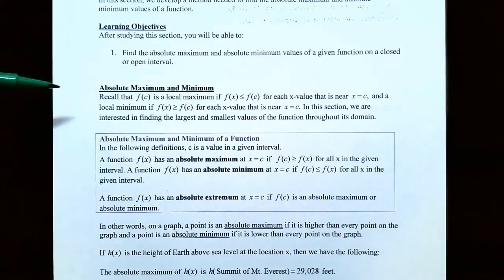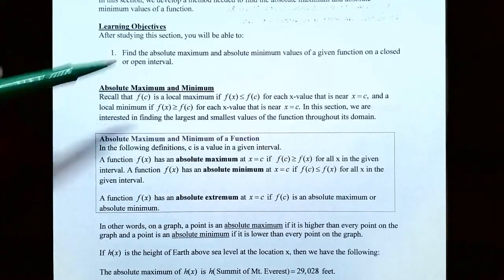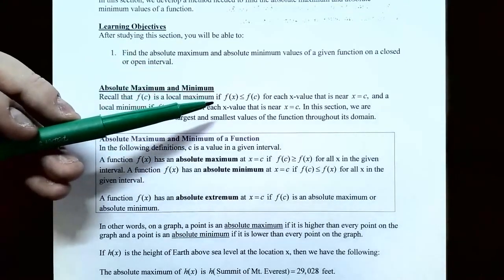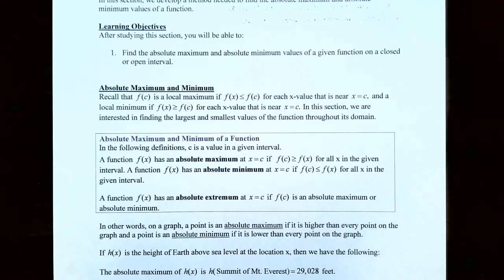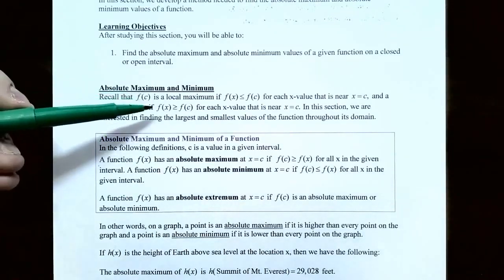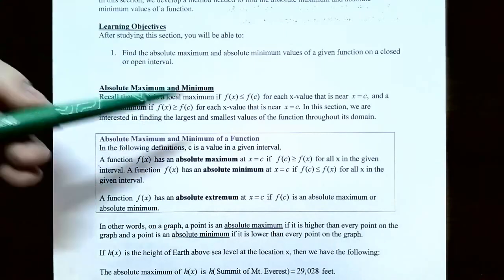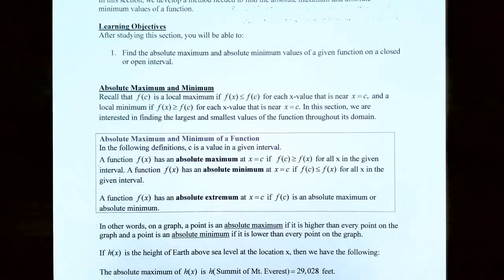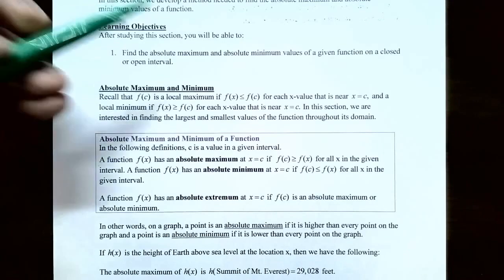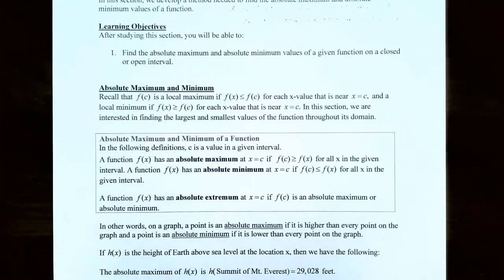Recall that f(c) is a y-value. It's the local maximum if all the other y values are less than or equal to f(c) for each x value that's near x equals c. A local minimum is where all the y values are greater than or equal to f(c) for each x value near x equals c — it's the lowest y value when x values are near x equals c. In this section we'll be interested in finding the largest or smallest values of the function throughout its entire domain, not just x values near x equals c.